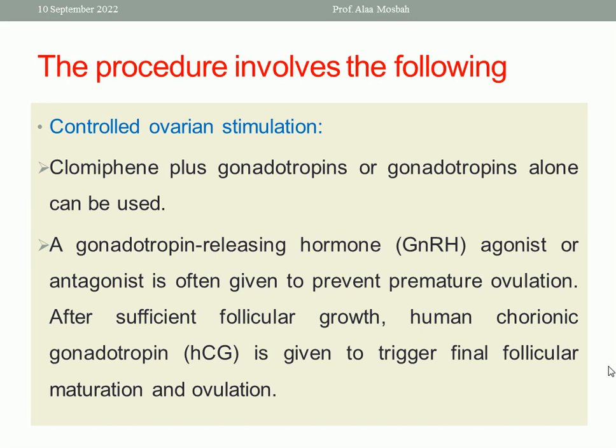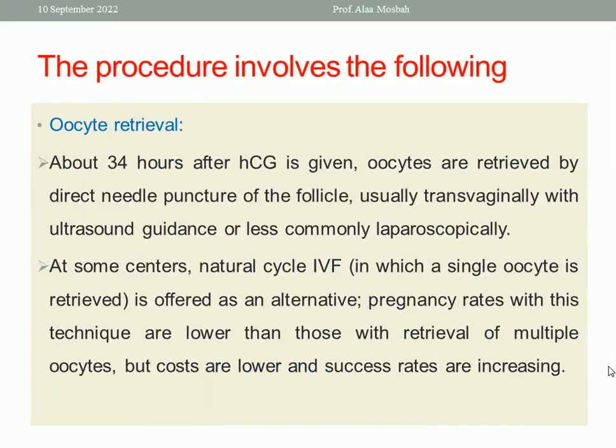After sufficient follicular growth, human chorionic gonadotropin (HCG) is given to trigger final follicular maturation and ovulation. The next step is oocyte retrieval using a needle guided by transvaginal ultrasound, 34 hours after HCG injection. An alternative is laparoscopy, but transvaginal ultrasound guidance is most common.